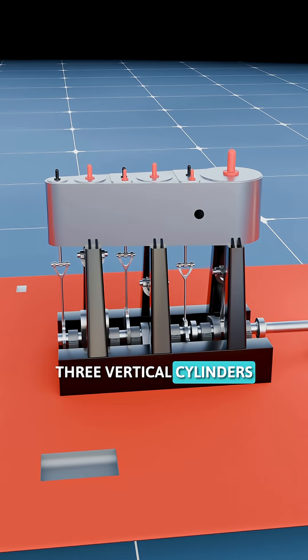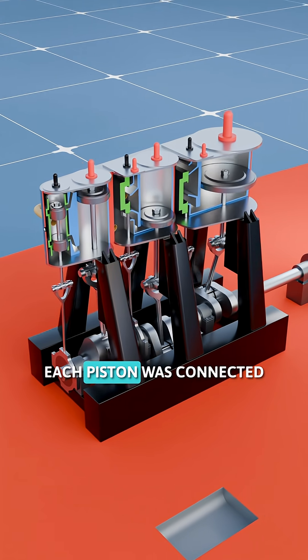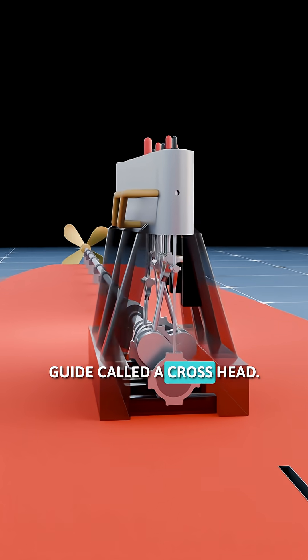The engine itself had three vertical cylinders of increasing size arranged in a line. Each piston was connected to a rod, which was guided by a sliding block guide called a crosshead.